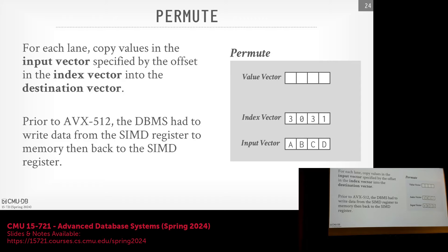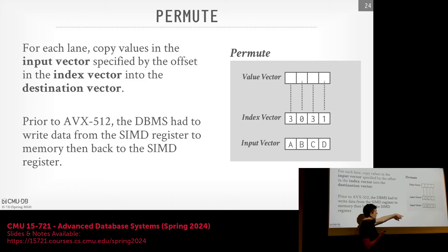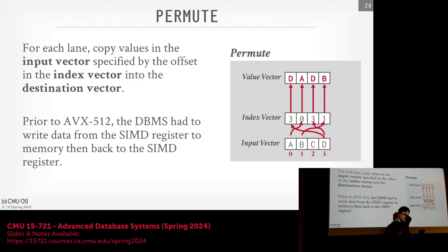The first primitive is permute: copy values from an input vector to specified positions in a destination vector according to an index vector. For example, index value 3 means 'write the input value at offset 3 (which is d) to this output position.' Prior to AVX512, you had to spill to memory and reload; now it's done entirely within registers as a single instruction.